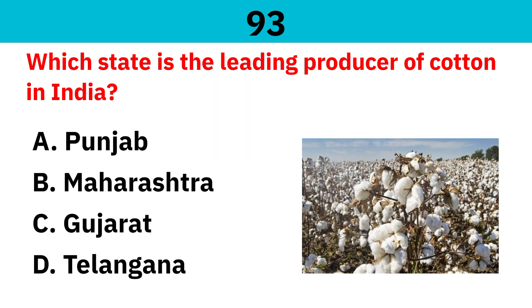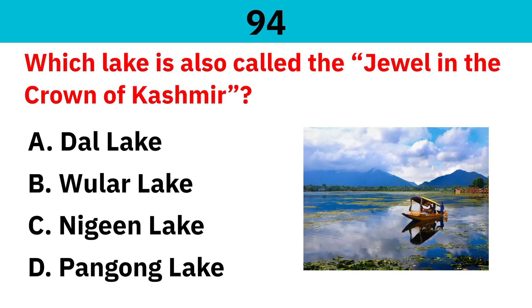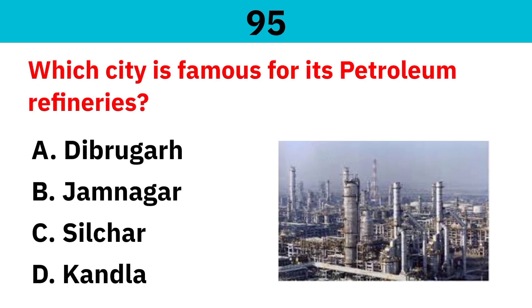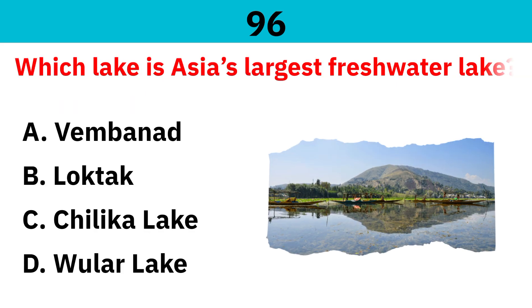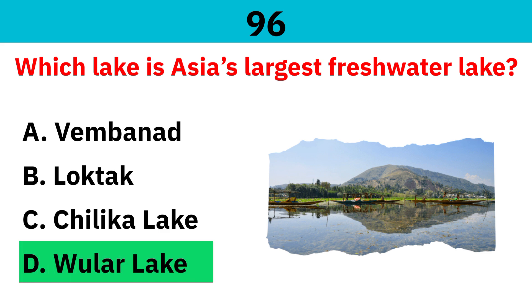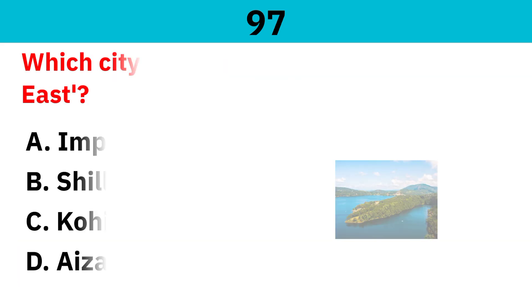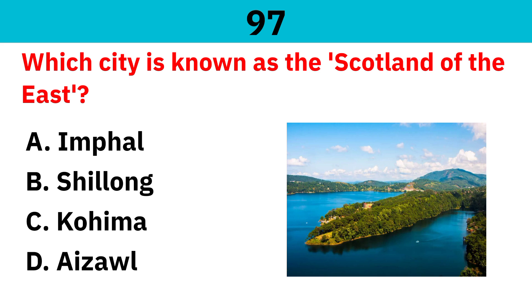Which state is the leading producer of cotton in India? Correct answer is Gujarat. Which lake is also called the jewel in the crown of Kashmir? Correct answer is Dal Lake. Which city is famous for its petroleum refineries? Correct answer is Jamnagar. Which lake is Asia's largest freshwater lake? Correct answer is Wular Lake. Which city is known as the Scotland of the East? Correct answer is Shillong.